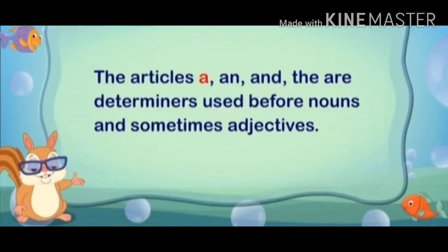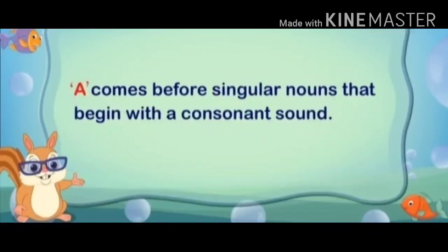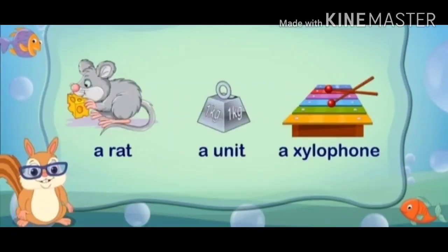Now we have to learn how to use these three little words. Examples: a boy, an orange, the Ganges. The articles A, AN, and THE are determinants, used before nouns and sometimes adjectives. A comes before singular nouns that begin with a consonant sound. For example: a rat, a unit, a xylophone.